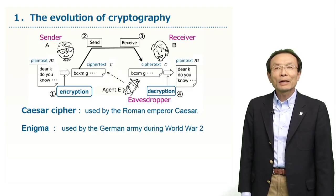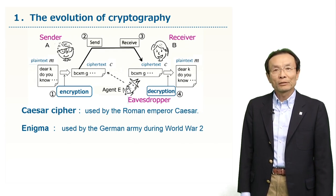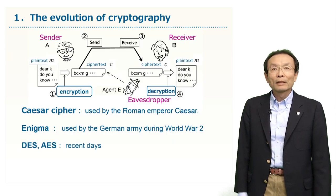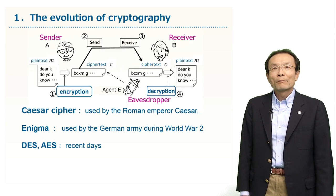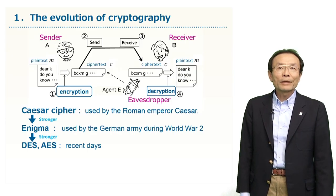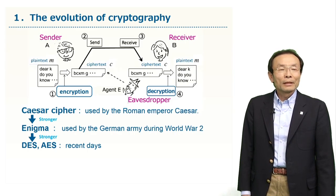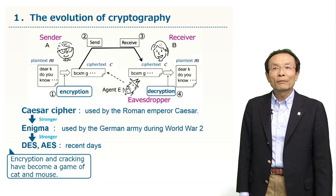However, even Enigma was cracked. In this day and age where we have much more powerful computers, the need for even stronger encryptions has also become greater. In recent days, encryption methods called DES and AES have become quite common, but these may not be enough in future. In these developments, cryptography has got stronger and stronger. In the world of cryptography, the strengthening of encryption and cracking of those codes have become a game of cat and mouse.